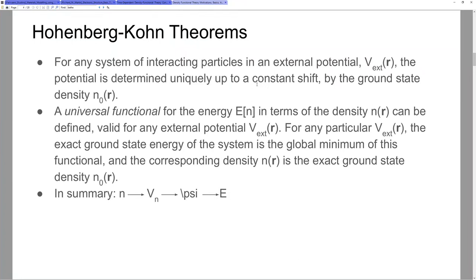The second claim — I wouldn't say theorem, but sort of the second rough claim here — is that a universal functional of the energy in terms of the density exists. Once I have the density, or if I have some way of getting the density, there exists a universal functional of density that is going to give me my energy for a given density. This energy includes the many-body kinetic energy, the many-body interaction energies — it's going to give me everything. The functional exists.